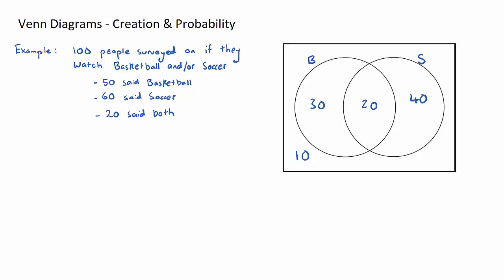A very common one will be little n of, say, the basketball set, which means how many people watch basketball. So we can go, okay, here's the basketball set here. How many people are inside the basketball set? 50. So n just means how many elements, that's what that means.